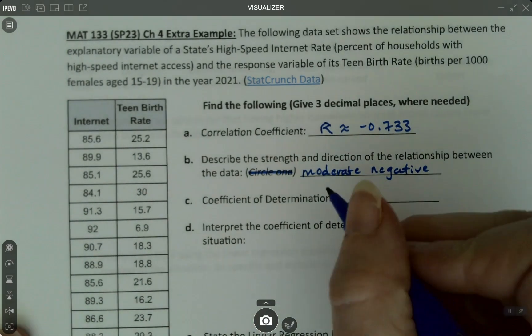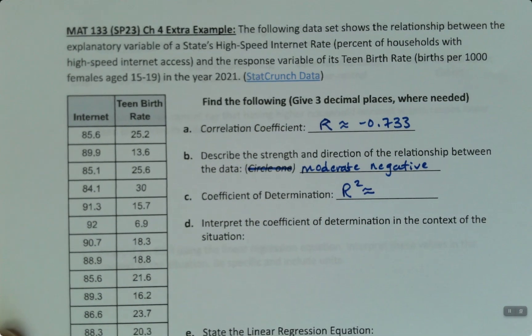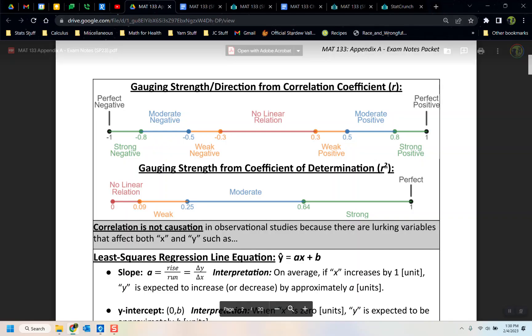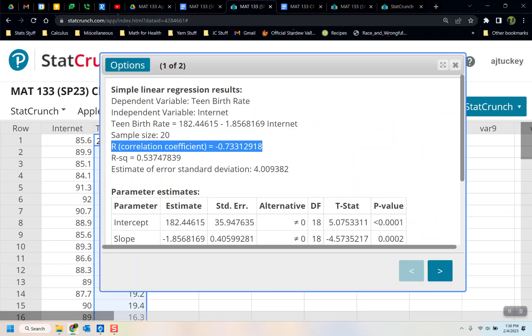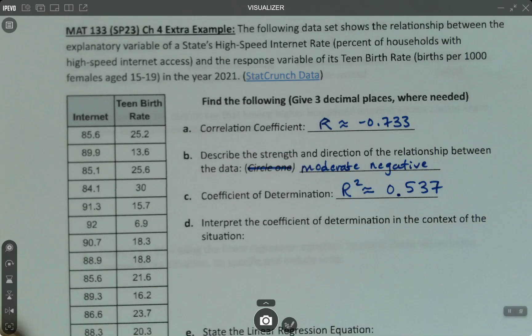Now the coefficient of determination, that's R squared. R squared is also in StatCrunch. It gives it to us right here. RSQ. SQ stands for squared. So it's 0.537. So I'm going to write that down. 0.537. There we go.